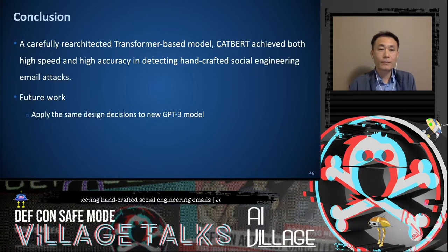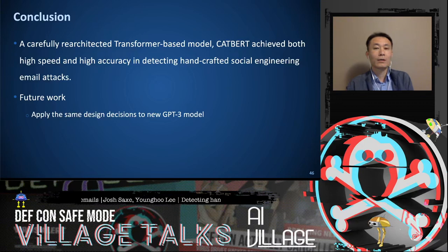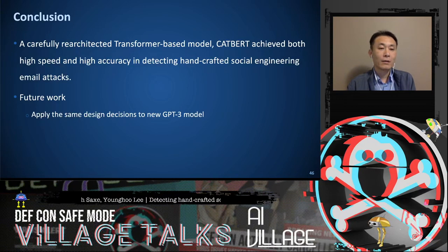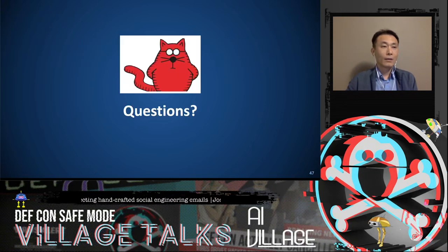In conclusion, our CatBot is a carefully re-architected transformer-based model. With this architecture, we achieve both high speed and high accuracy in detecting handcrafted social engineering email attacks. In the future, we want to apply the same design decisions to the new GPT-3 model. Thank you.